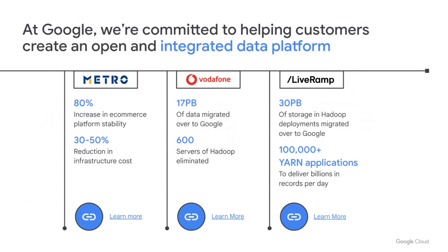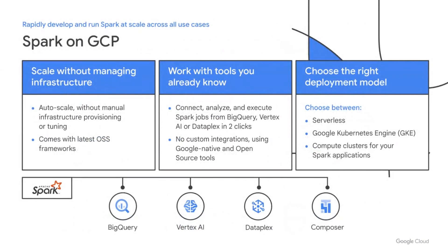As we have been on this journey over the past five years, we have learned a lot from helping customers migrate some of the largest open source deployments in the world to Google Cloud. One trend that stood out is the popularity of Spark. We have a dedicated focus on Spark at Google Cloud — our commitment to making Spark a first-class citizen within GCP for all your workloads, be it ETL, data science, or data exploration.